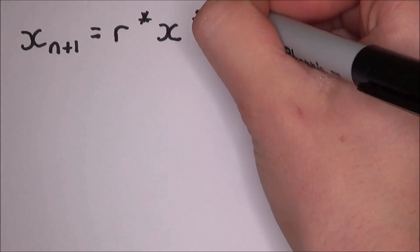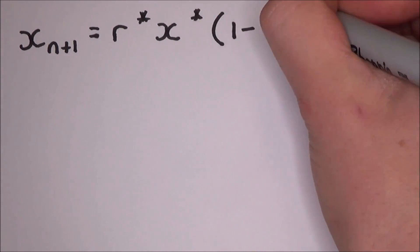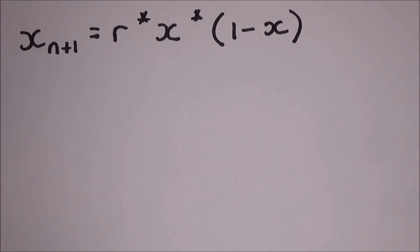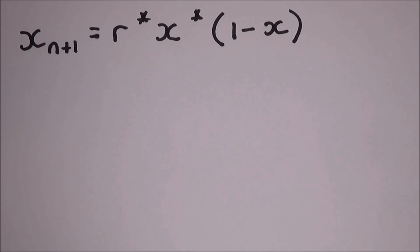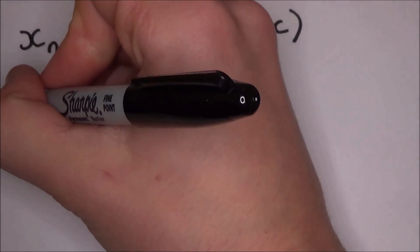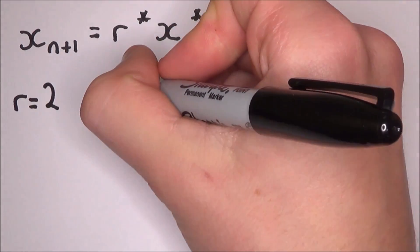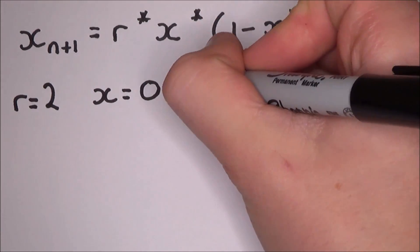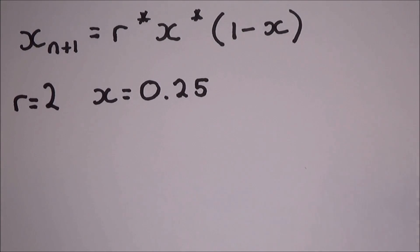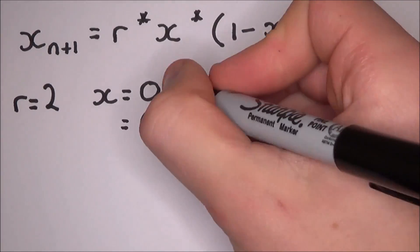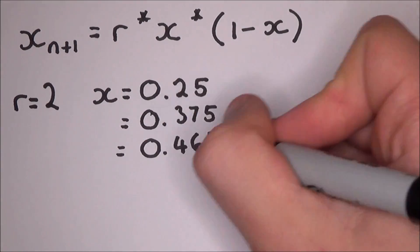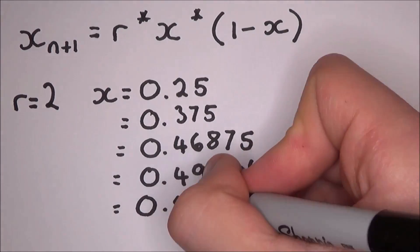The best way to show a static attractor is with a mathematical formula. The formula is: x(n+1) = r × x × (1 − x), where r is a parameter. If we start with the parameter r being 2 and x as 0.25, we can follow this through and we'll end up where it levels off at about 0.5.